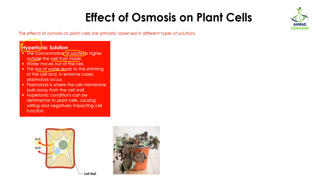Here you can see the cell has shrunk. In extreme cases, plasmolysis can occur. Plasmolysis means that the cell membrane is going to be pulled away from the cell wall. Here this part is the cell wall and the cell membrane is moving away from the cell wall because plasmolysis is happening. As the amount of water leaving the cell increases, plasmolysis will occur.